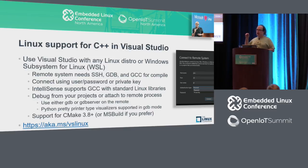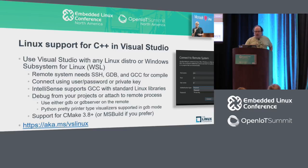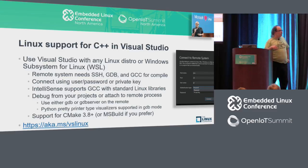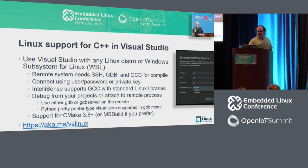We're going to improve that in the next release of Visual Studio — we have some stuff coming that's going to help start synchronizing headers automatically so you get IntelliSense per box that you connect to. You can also debug your projects or attach to a remote process to debug with GDB or GDB server. We've got support for Python pretty printer types, and we also have support for CMake starting with Visual Studio 15.4.